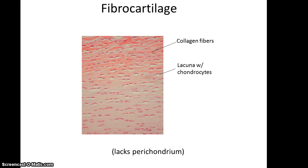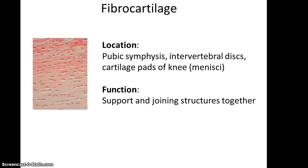Fibrocartilage has mostly collagen fibers in visible bundles, with lacunae where chondrocytes are located. However, fibrocartilage lacks a perichondrium. It can be found in the pubic symphysis connecting the pelvic bones, in the intervertebral discs of the vertebral column, and in the cartilage pads of the knee known as the menisci. It functions in support and joining structures together.